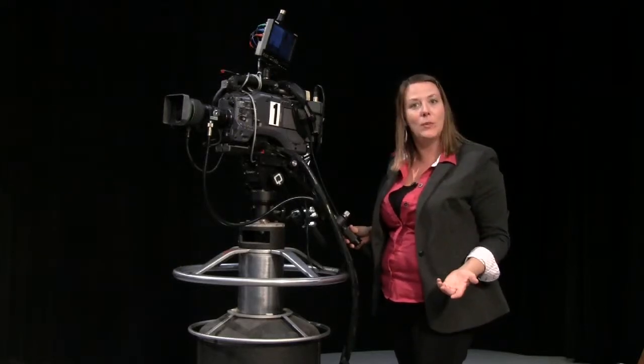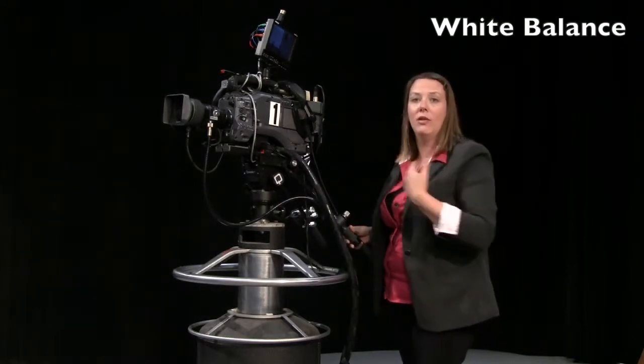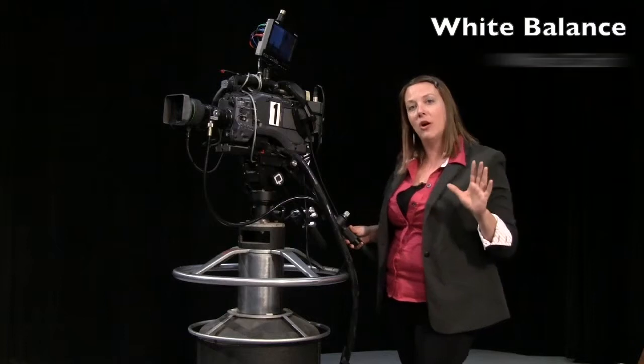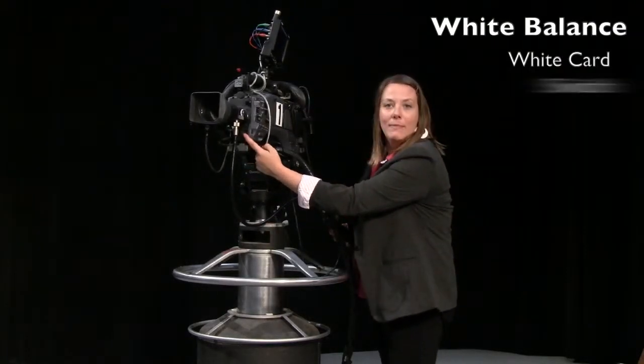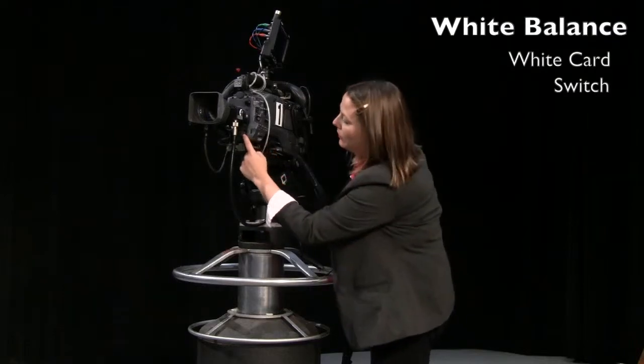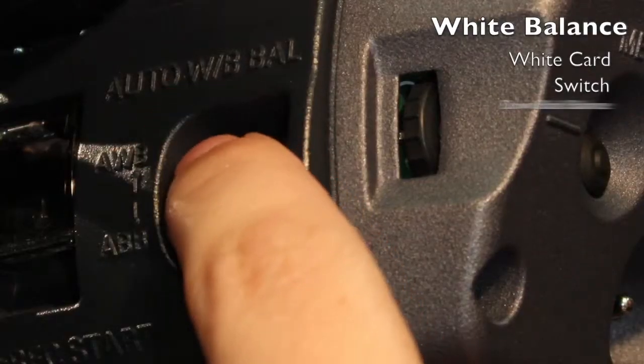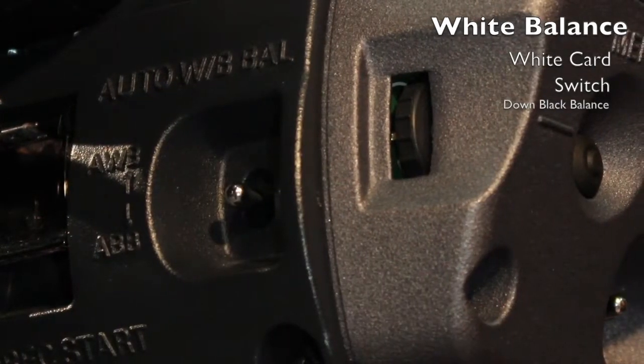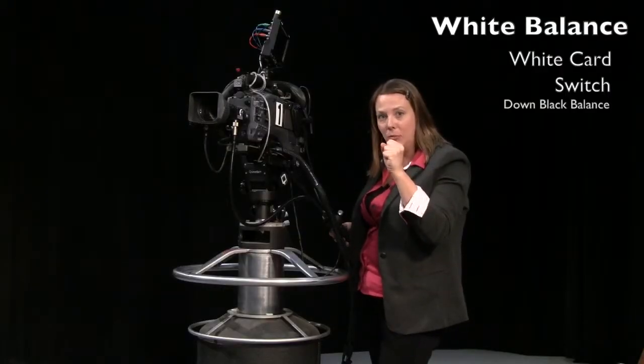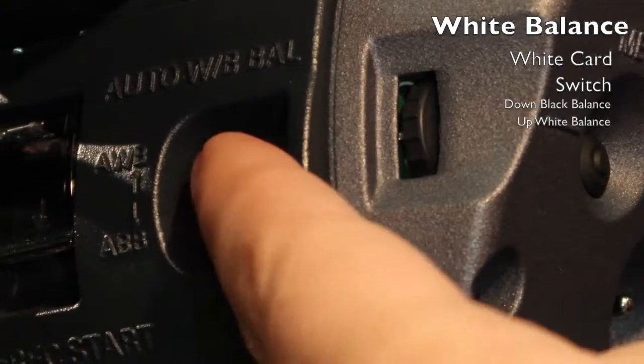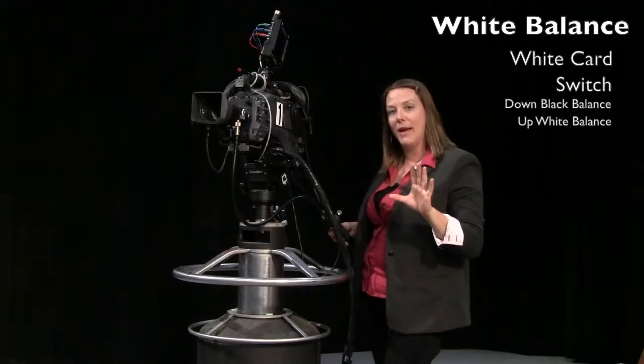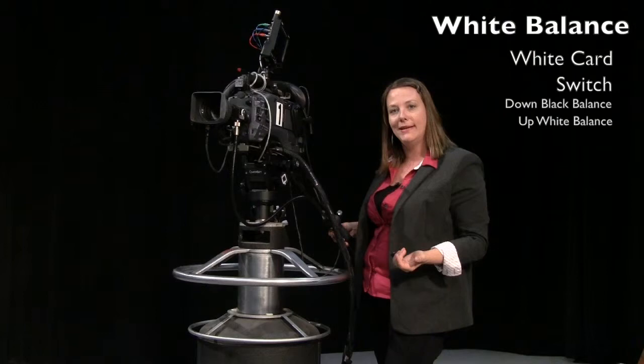We would set our lights in our environment, bring a white card to the set, and then right underneath here, we have our white balance switch. If you toggle the switch down, it will allow you to black balance, closing down the iris completely for black. And then you flip the switch up, which will manually white balance on the white card in your light setting.